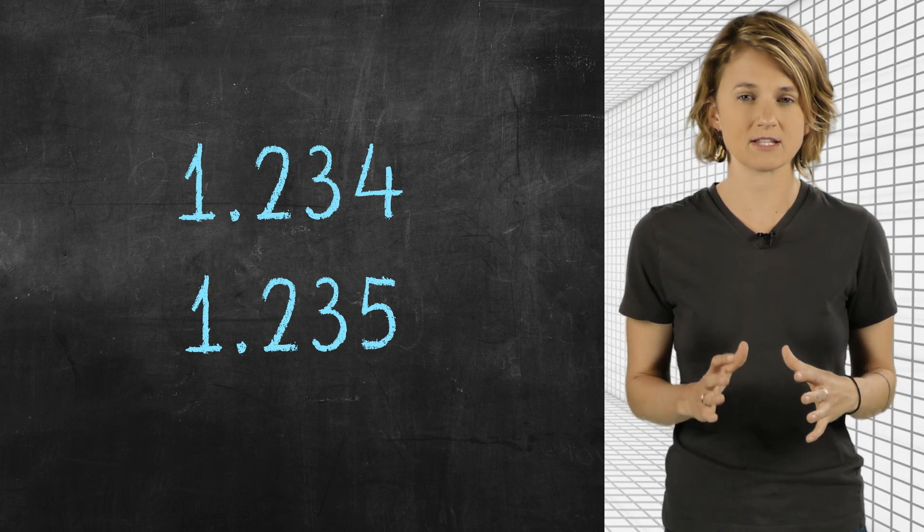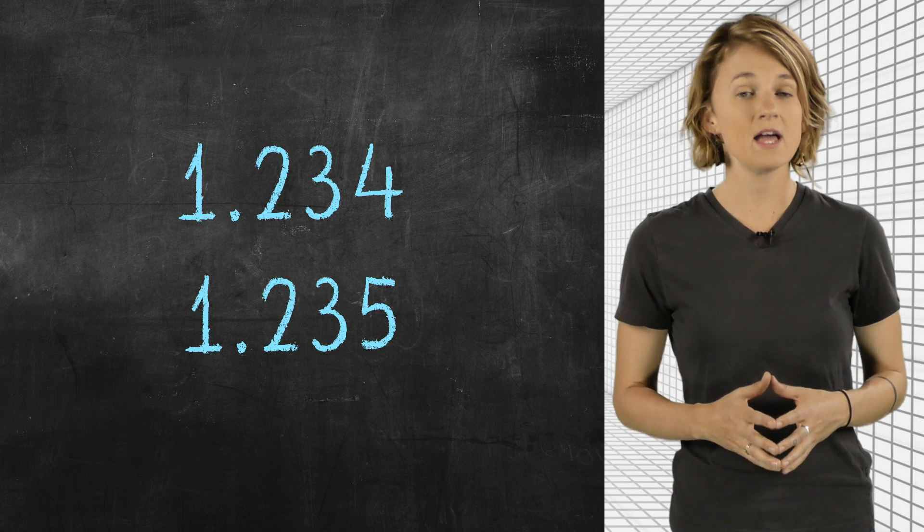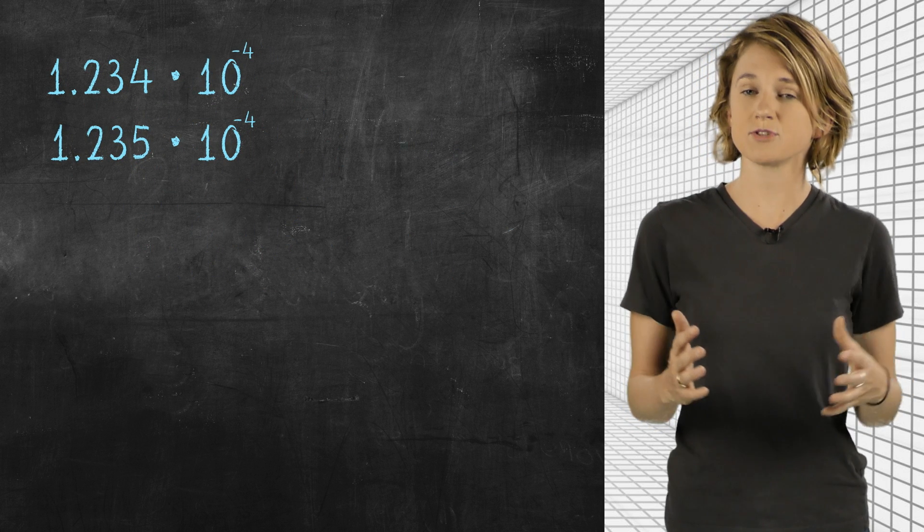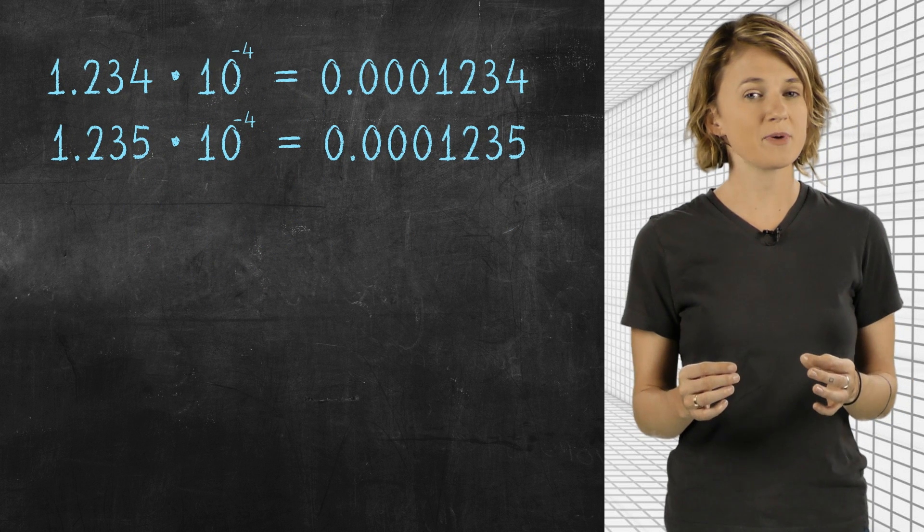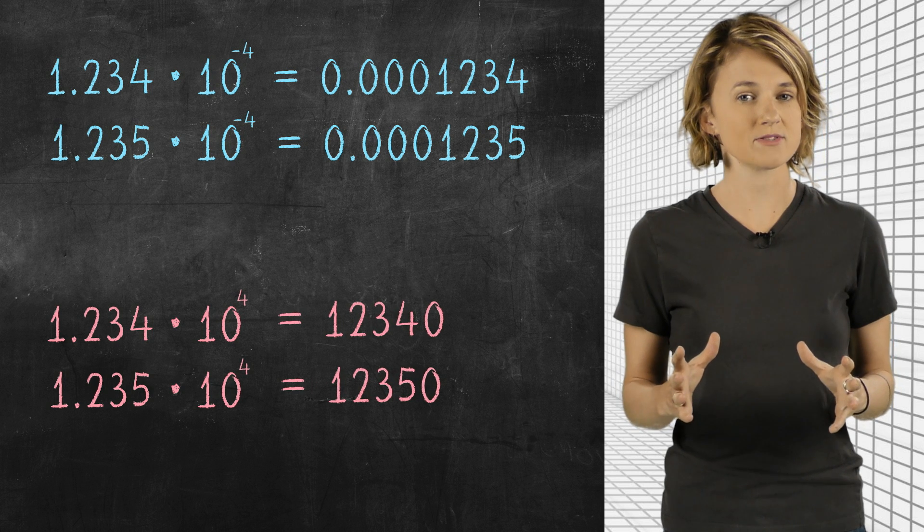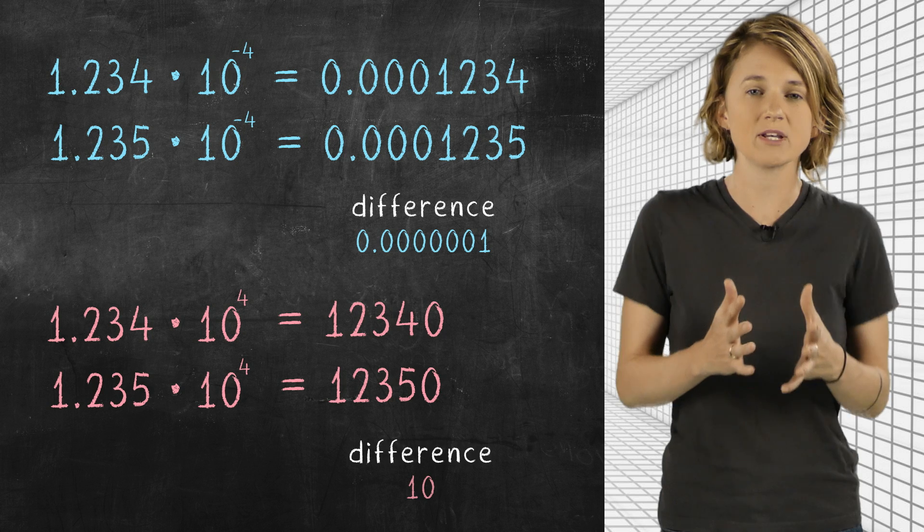Here's two mantissas, each with four significant digits, 1.234 and 1.235. If we multiply them by 10 to a negative exponent, we get two small numbers. And if we multiply them by 10 to a positive exponent, we get two big numbers. Notice that the small numbers are much closer together than the big numbers.